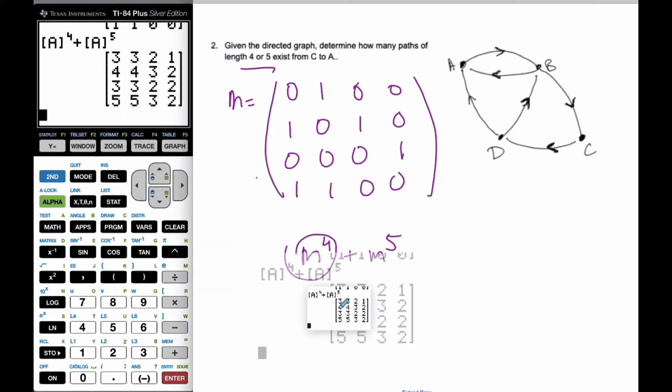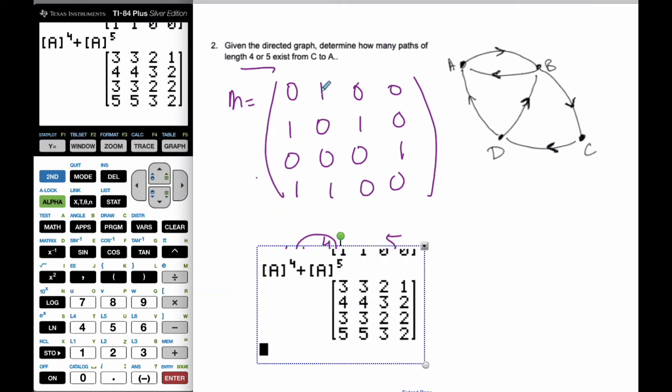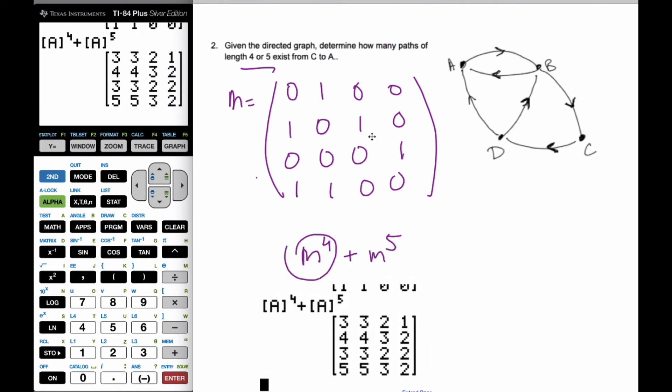And so I can pull this down here, and it wants to know how many go from C to A. So this is C, this is A going in this way and out. So there are three possible paths that are 4 or 5 lengths.